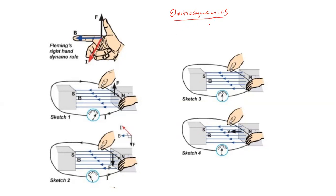In electrodynamics we are going to talk about two devices: the generator and the motor — how these two devices actually operate. Both devices operate on the basis of what you learned in Grade 11 from electromagnetism.